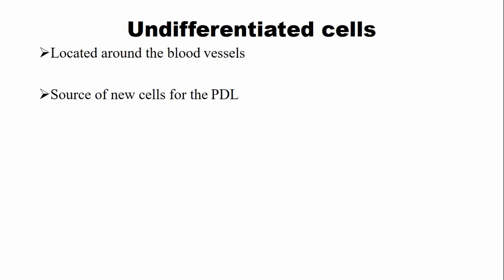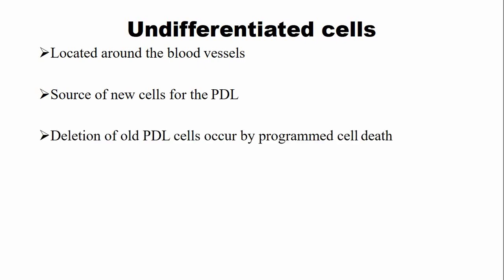There are also undifferentiated cells, known as progenitor cells, located around the blood vessels — also called perivascular cells. These cells are the source of new cells for the PDL, as old cells are deleted by programmed cell death. These progenitor cells can differentiate into any cell type as the old cells are deleted by apoptosis.